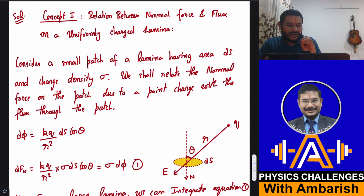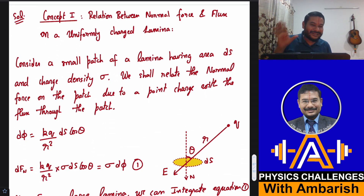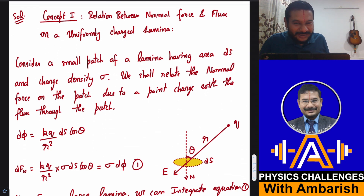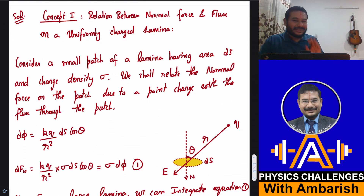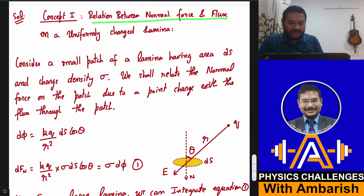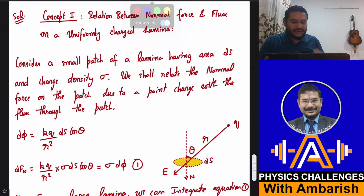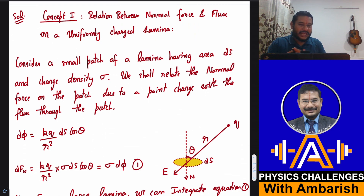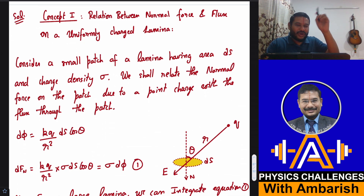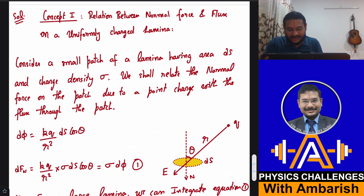So the first concept: the relation between the normal force and flux on a uniformly charged lamina. It turns out that if I know the flux through a lamina and I know the charge density, then I can simply find out the normal force on the lamina as a product of sigma and the flux. Let's see what kind of result we get.